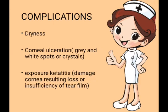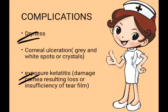Complications include dryness of the eyes, corneal ulceration — gray and white spots or crystals are seen on the cornea — and exposure keratitis, which means inflammation or damage to the cornea. The cornea gets damaged, resulting in insufficiency of the tear film. The tear film, which forms in three layers when we blink, does not form properly in exposure keratitis. This is directly related to lagophthalmos — inability to close the lids — so the first and third complications are related to one another.